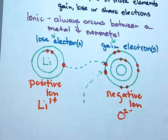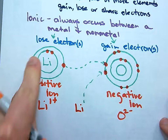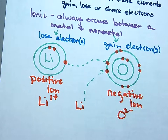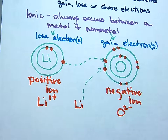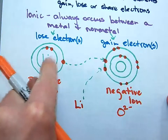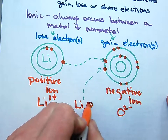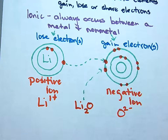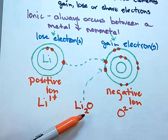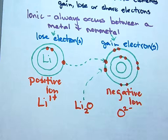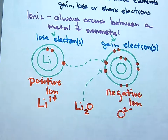Looking at the valence — all you look at is the outside. Oxygen has one, two, three, four, five, six, seven valence electrons, so it has to gain two. Where does it get the second electron? From another lithium. So for lithium and oxygen to bond, I need two lithiums, because lithium can only give up one but oxygen needs two.